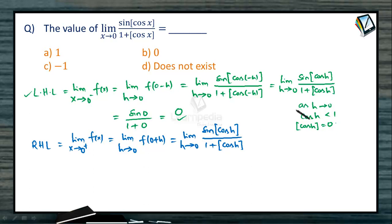As h tends to 0, cos h follows the same argument, so this is again sin(0) / (1 + 0) = 0. The right hand limit is also 0.